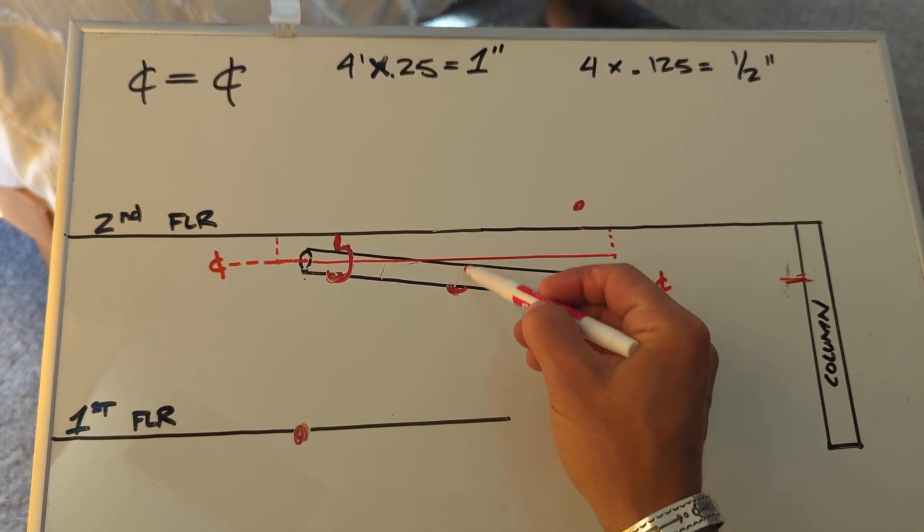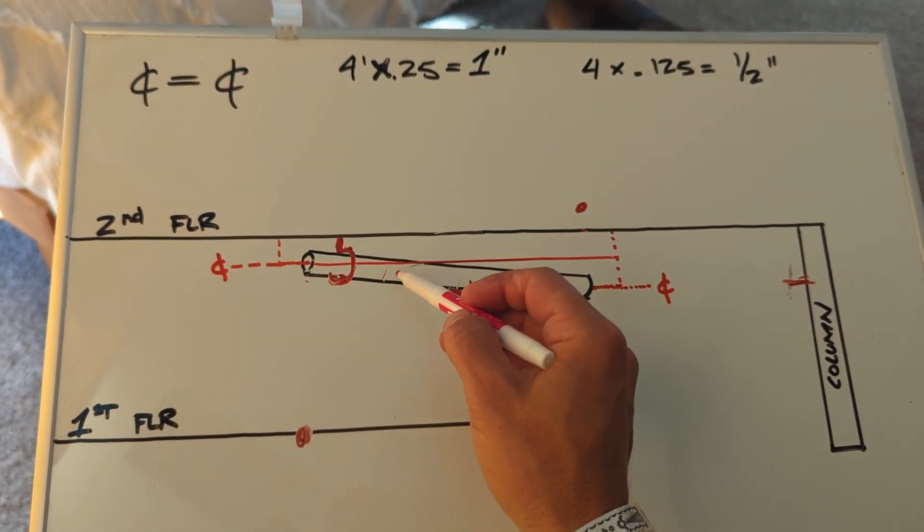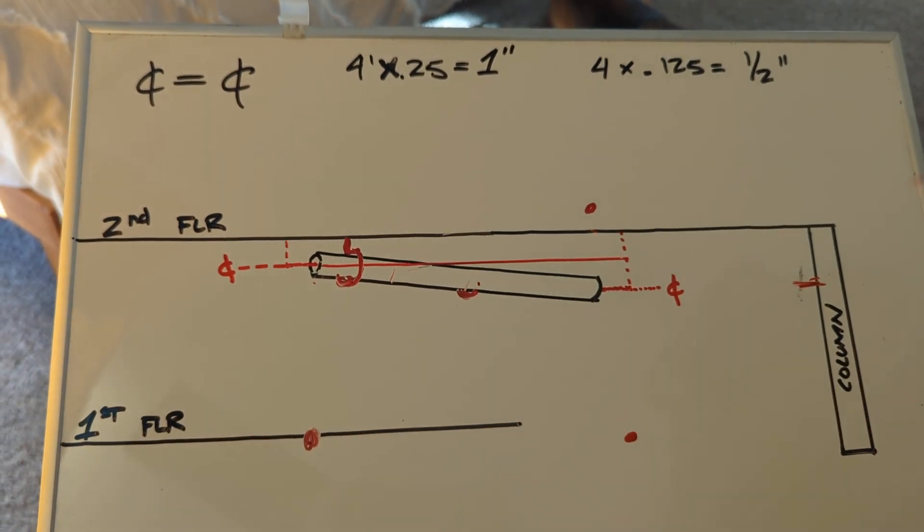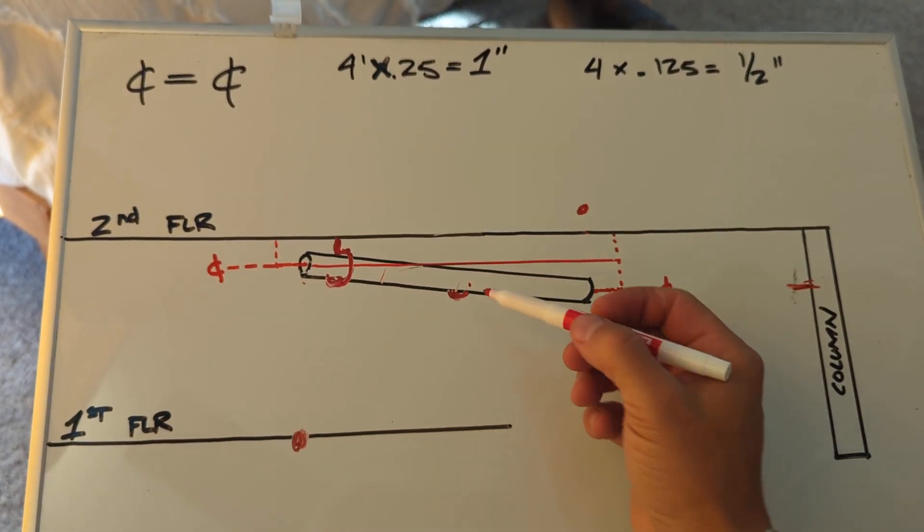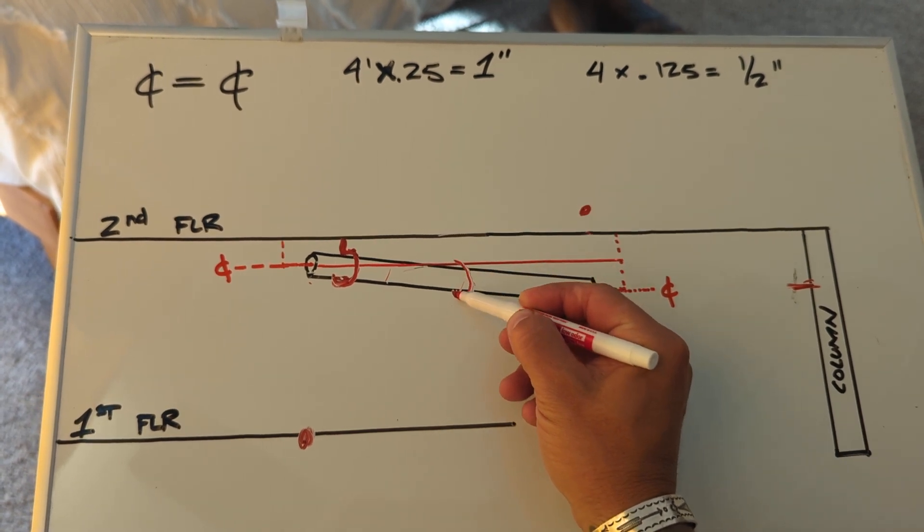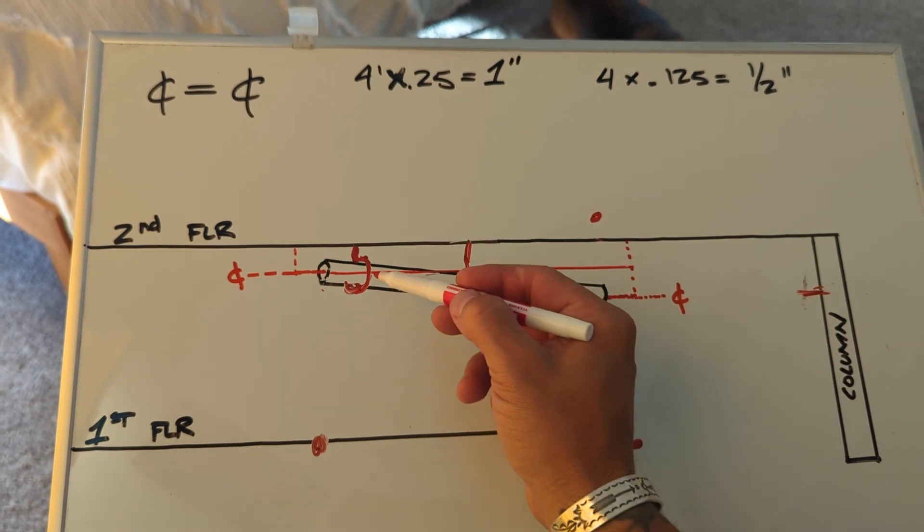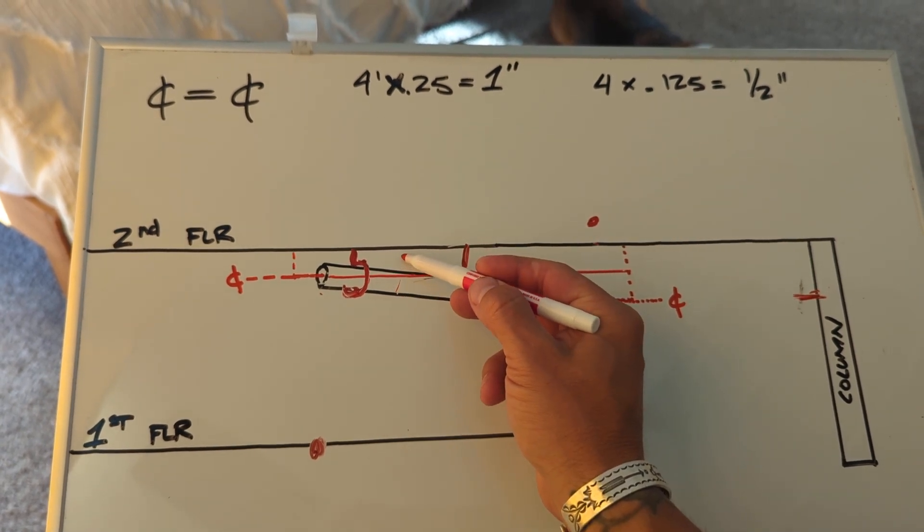You pull your measurement, or you put your grade level on there, and your grade level's going to show you a quarter inch. So say this is PVC and you have to go every four feet, you put another hanger here four feet away, and then you'd measure this piece of pipe right here with your grade level.